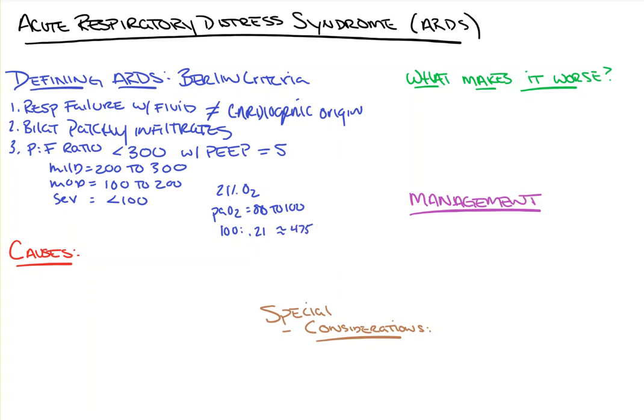That would be a normal P-to-F ratio. Now imagine you're being cranked up to 70, 80, or 90% oxygen — so instead of 0.21, it's 0.7 or 0.8 — and you're still only getting a PaO2 of 100. It's a much, much lower ratio.